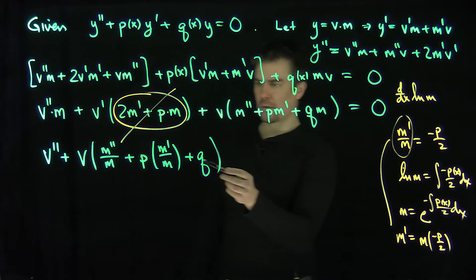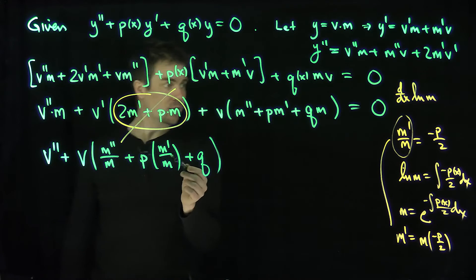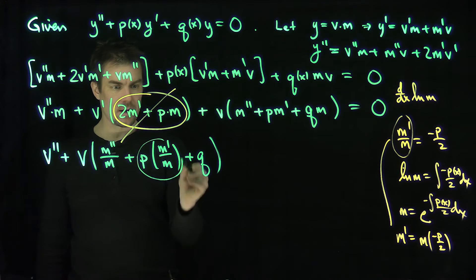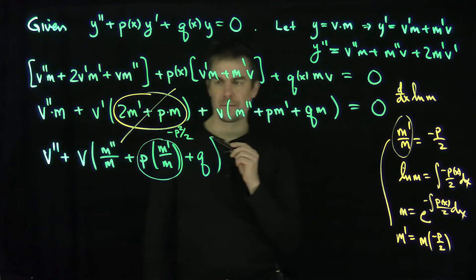All right. So m prime over m is negative p over 2. So this is negative p to the fourth. Excuse me, this is negative p squared over 2. So this whole term over here is negative p squared over 2. That part's easy.